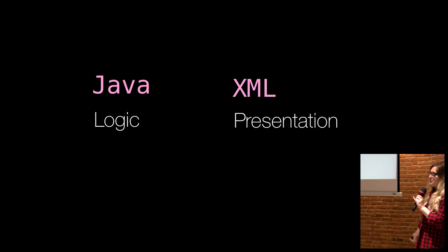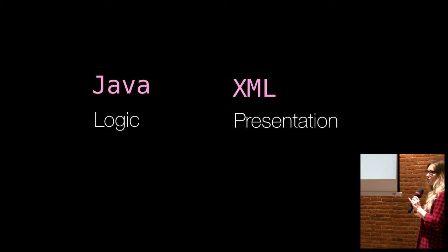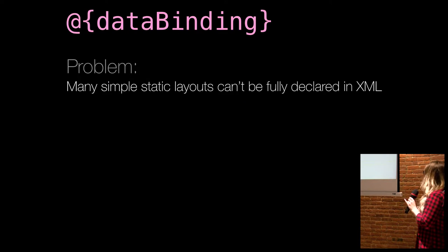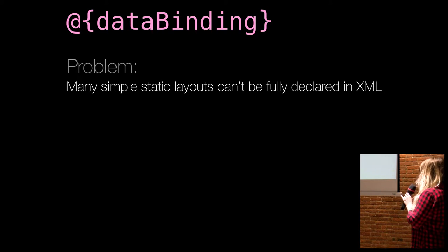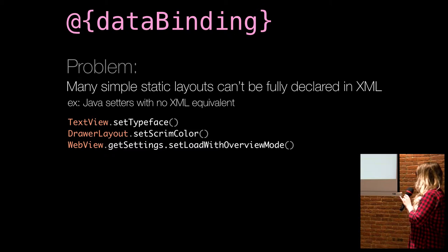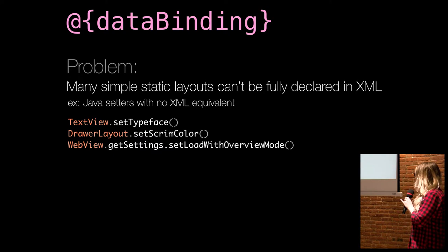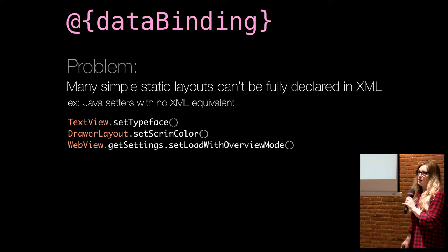So when we all started developing Android, we learned that Java is for your logic and ideally all of your presentation goes in your XML template. This would be the ideal world. However, we found out that Android, as it comes out of the package, literally does not let you declare even some simple layouts in XML. There are lots of Java setters with no XML equivalent: set typeface, some of these new support libraries, set scrim color, set load with overview mode — that definitely has to do with layout, but you can't set it in XML.